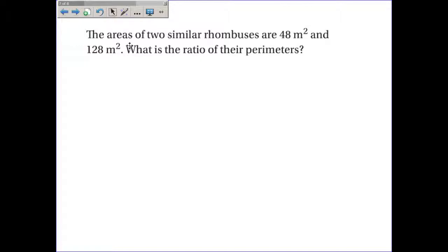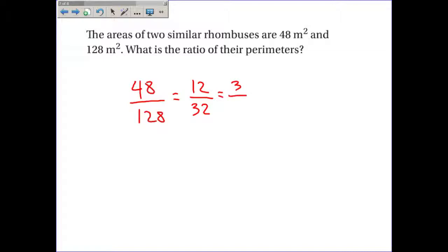Last problem: the areas of two similar rhombi are 48 m² and 128 m². What is the ratio of their perimeters? The ratio of perimeters equals the ratio of side lengths, so we start with the ratio of areas: 48/128. Dividing both by 4 gives 12/32, then dividing by 4 again gives 3/8. To find the ratio of the perimeters, we take the square root of 3/8, which is approximately 0.61.